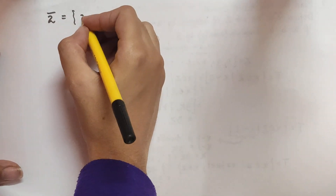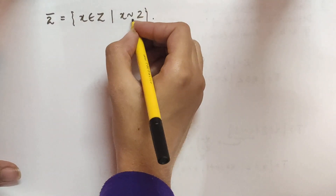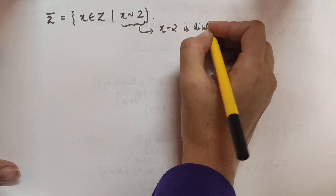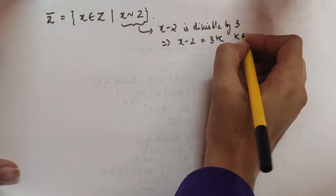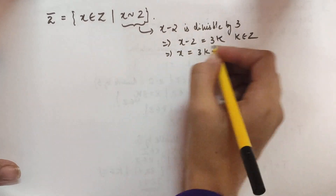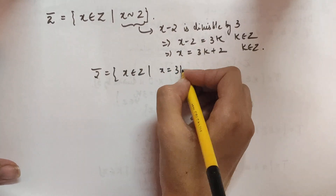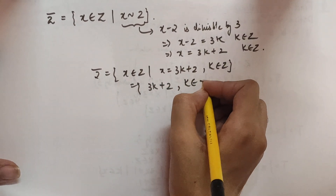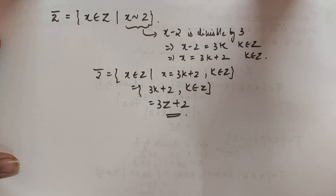Now let's find the equivalence class of 2: [2̄] = {x ∈ Z : x ~ 2}. x related to 2 means x minus 2 is divisible by 3, so x minus 2 = 3k, giving x = 3k + 2 for k ∈ Z. Therefore [2̄] = {3k + 2 : k ∈ Z} = 3Z + 2.